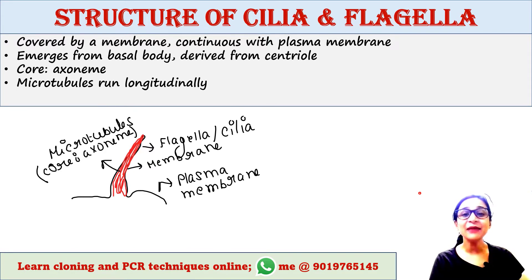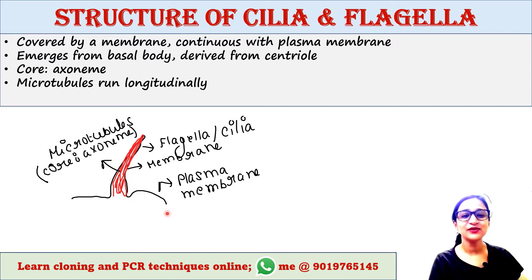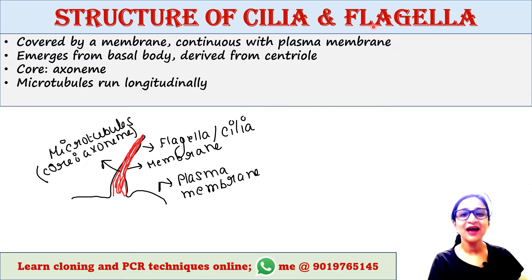Both cilia and flagella share the same structure. The entire cilia or flagella is covered by a membrane, and this membrane is continuous with the plasma membrane of the cell. A cilia or flagella emerges from a basal body, and that basal body is derived from a centriole.